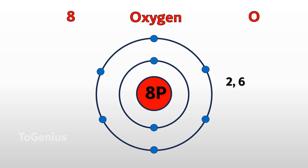Oxygen has an atomic number of 8, meaning it has 8 protons and 8 electrons. Being in period 2, it has 2 electron shells. The first electron shell can hold a maximum of 2 electrons, and the second shell has 6 electrons.